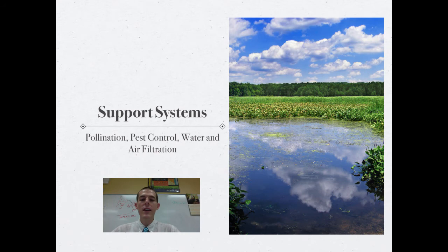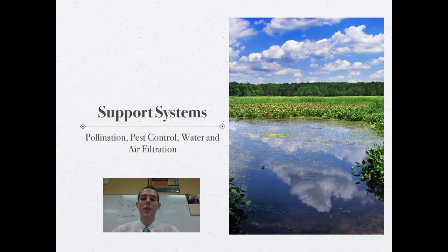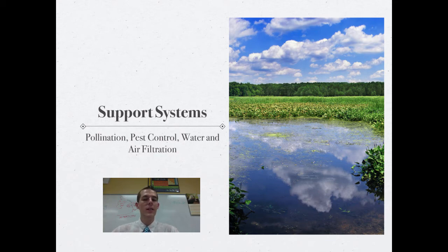Number three on the list is general support systems. These are systems of support that the environment provides for us. Some examples of support services would be pollination. If there were not birds and bees and bats to pollinate our plants,